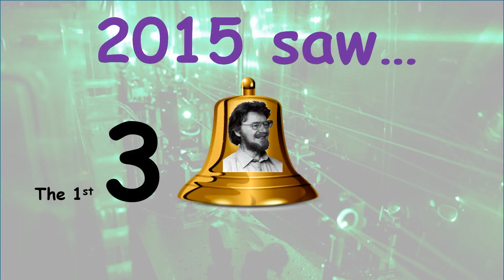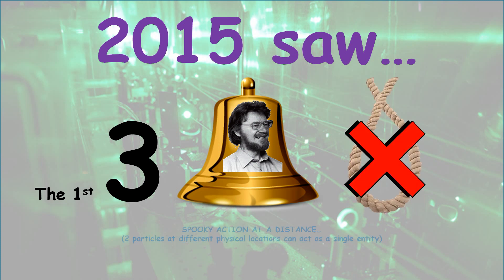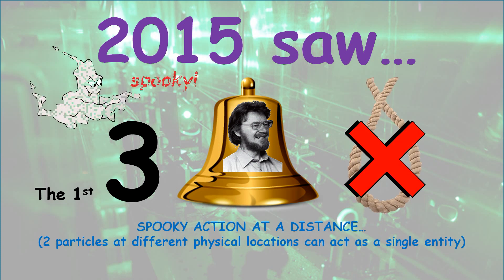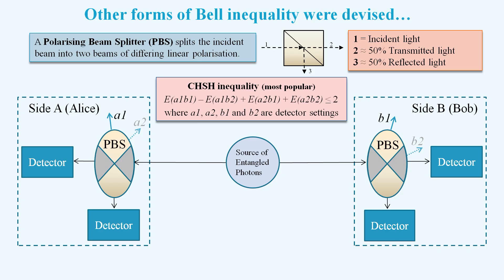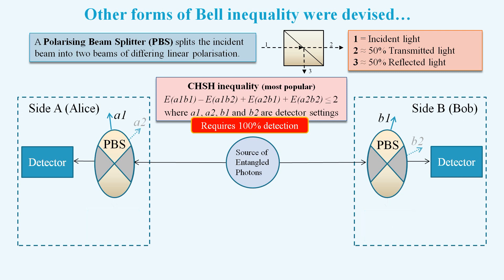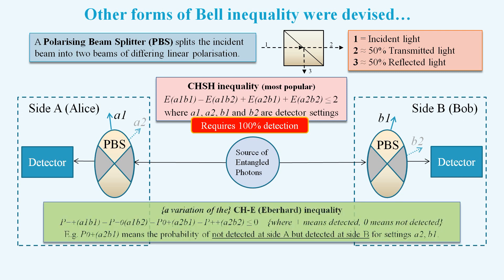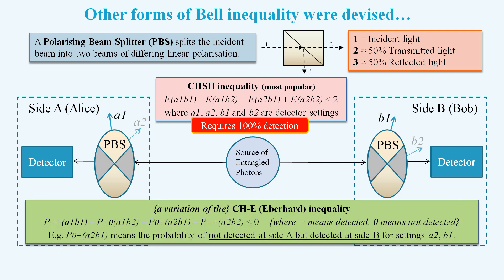2015 saw the first three Bell test experiments that claim to contain no loopholes. Surely spooky action at a distance must really be happening. The use of the CHSH inequality for a photon-based Bell test is problematic because it requires 100% detection, which we cannot achieve with photons. But if we remove one detector at each side, then we can use the Eberhard inequality, which takes account of detection at one side only.